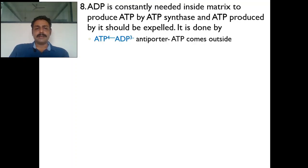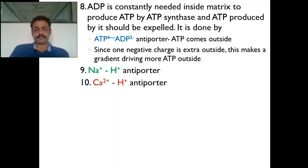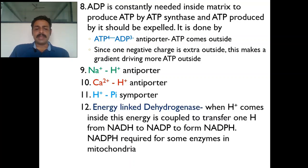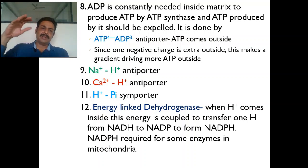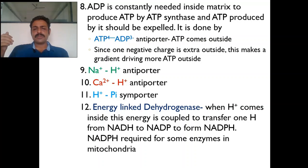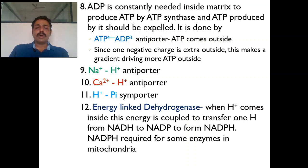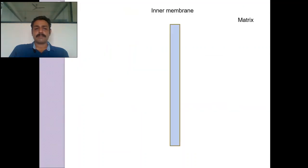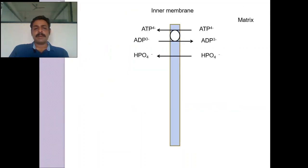Alpha-ketoglutarate from amino acids during starvation enters mitochondria by malate-alpha-ketoglutarate antiporter. There is also an ATP⁴⁻/ADP³⁻ antiporter — oxidative phosphorylation requires ADP to combine with phosphate to become ATP; this ATP should not accumulate and ADP should not be deficient. So ADP goes inside and ATP comes outside. Also: Na⁺/H⁺ antiporter, calcium-hydrogen antiporter, hydrogen-phosphate symporter. There is an energy-linked transdehydrogenase — NADPH is not normally used for energy but can be converted to NADH.